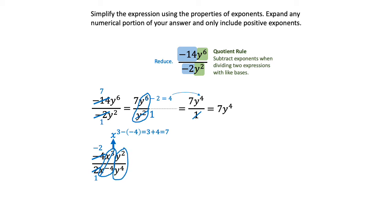For the y's, since 4 is the greater exponent, I'm going to start that subtraction in the denominator. 4 minus 2 is 2, so I will put y squared in the denominator. The final expression shows negative 2 and x to the 7th in the numerator, and y squared in the denominator, with all the subtraction and canceling done. And that's my final expression.